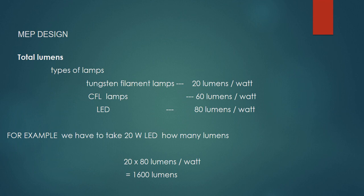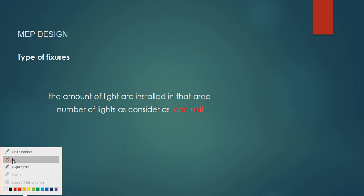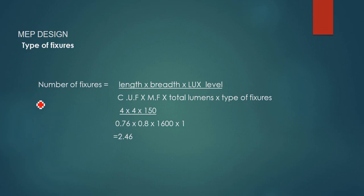For example, 20 watts LED means 80 lumens into 20 watts, we will get 1600 lumens total. Next one is the type of fixtures. The amount of lights installed in that area, we consider as one unit. A rectangular symbol with an 8-hour area - this is one, two, three, four, five, six, seven, eight, nine - this is known as one unit of LED.